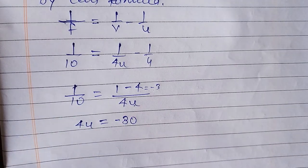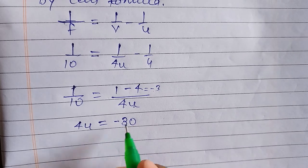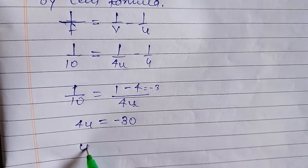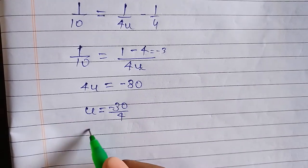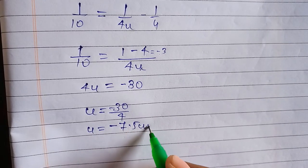And 4u into minus 1 is equal to minus 1, 4u. So u equal to minus 30 by 4, so u equal to minus 7.5 cm.